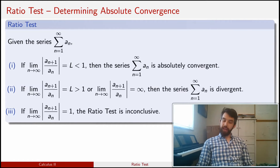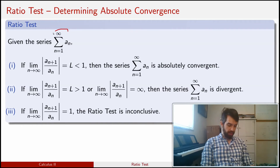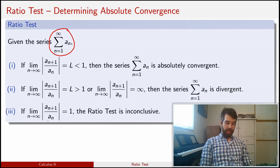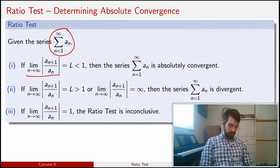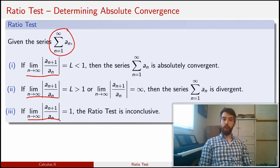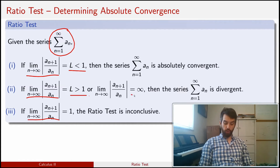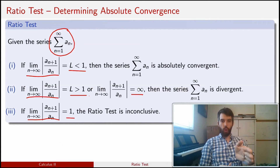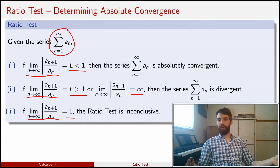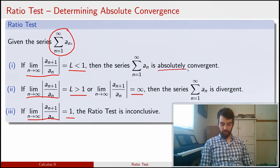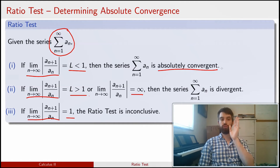Here is the ratio test. Given a series from n=1 to infinity of a_n, we look at the limit of the absolute value of a_{n+1} over a_n. There are three cases. If that limit is a number less than 1 — for example, one half — then the series is absolutely convergent. Absolute convergence is a stronger claim than just convergence.